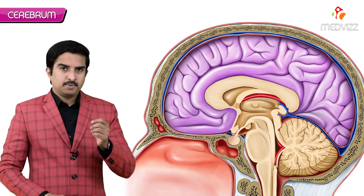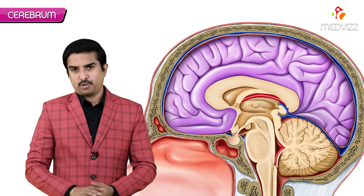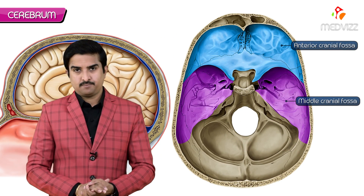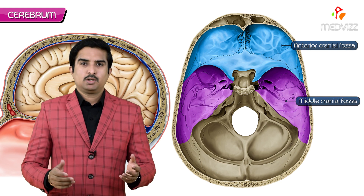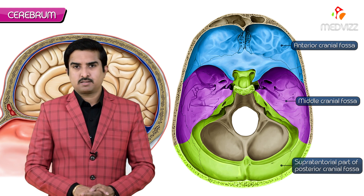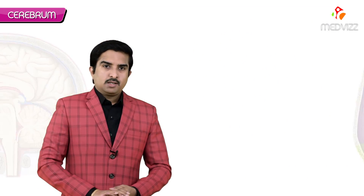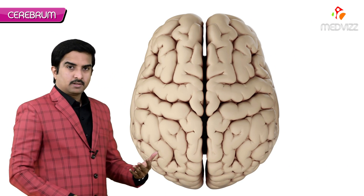In today's class we are going to discuss one of the most important topics of the neuroanatomy series, which is the cerebrum. The cerebrum is the largest part of the brain, occupying the anterior as well as middle cranial fossa and also the supratentorial part of the posterior cranial fossa.